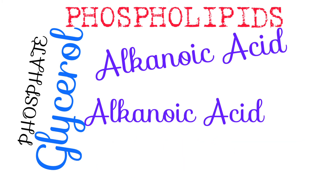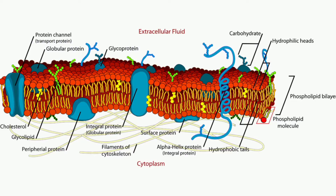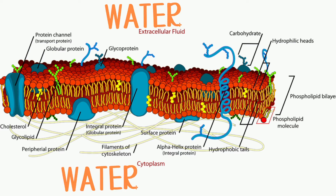Now, this amphipathic structure is exactly what makes them so perfect as the functional units of cell membranes. As we know, water makes up more than half of our bodies. And the thing is, when phospholipids find themselves in water, they arrange themselves in a way as to please both sides of them.